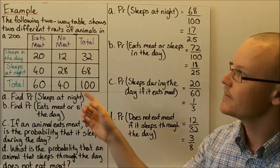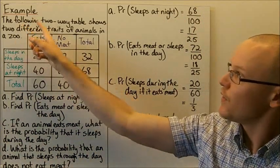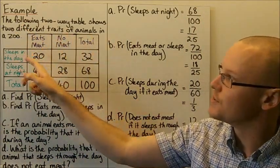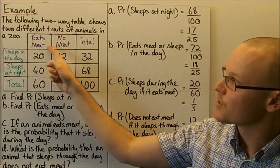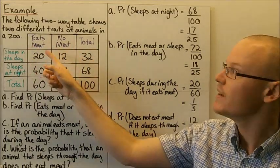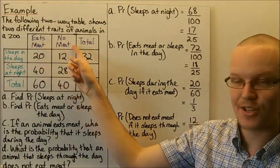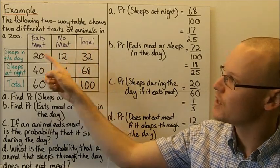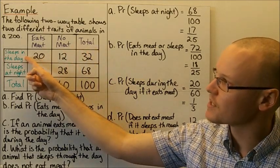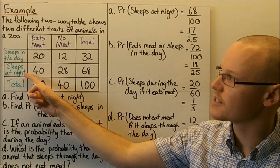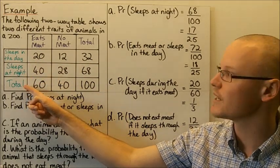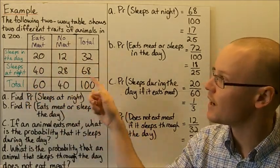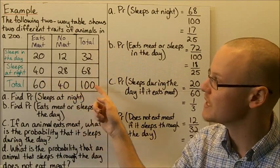Looking at an example now: the following two-way table shows two different traits of animals in a zoo. The first trait along the top is eats meat, does not eat meat, and the total. The rows are sleeps in the day, sleeps at night, and the total. The total number of animals in the zoo is 100.